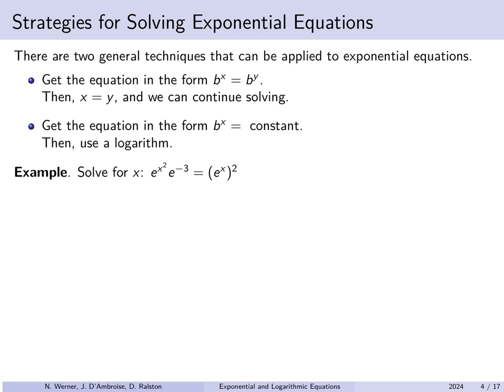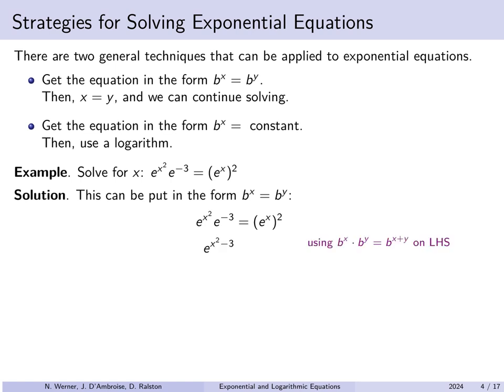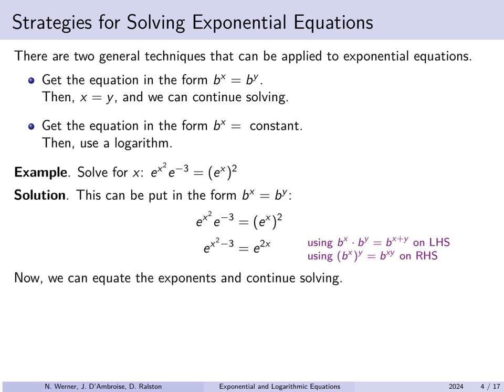For example, solve for x: e^(x²) · e^(-3) = e^(2x). We can get this to look like b^x = b^y with the same base. On the left, e^(x²) · e^(-3) = e^(x²-3), and on the right we have e^(2x). Now with the same base on both sides, the exponents must be equal: x² - 3 = 2x. This is just a quadratic. Moving 2x to the other side, it factors as (x-3)(x+1) = 0, giving x = 3 or x = -1. We found two values of x which solve the original equation.